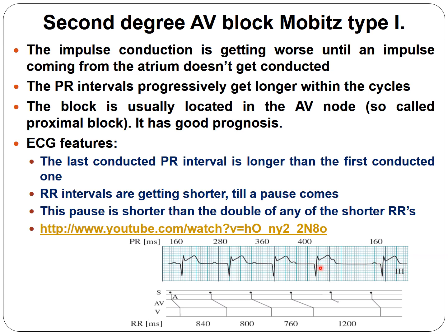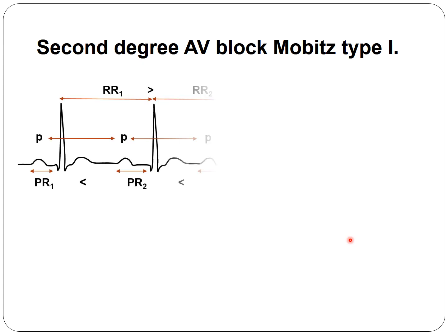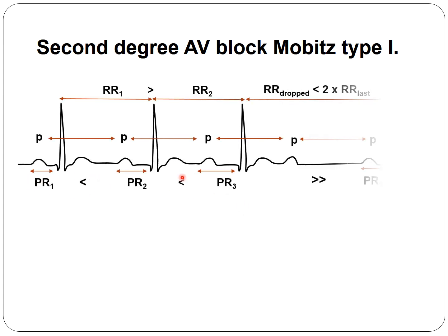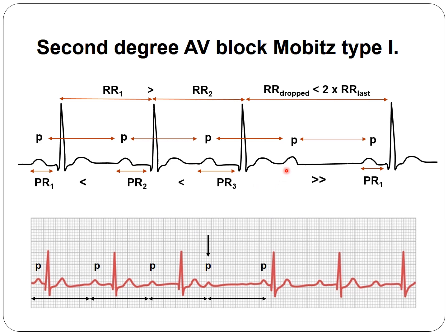You can see the difference between the last and first conducted PR intervals — the last one is longer than the first, representing Mobitz Type 1 second degree AV block. The pause is shorter than twice the last RR interval. To summarize: the PR gets longer and longer, then a beat is dropped, and after that the cycle restarts with a shorter PR. The dropped RR interval is less than twice the last RR interval — this is how we differentiate Mobitz Type 1.